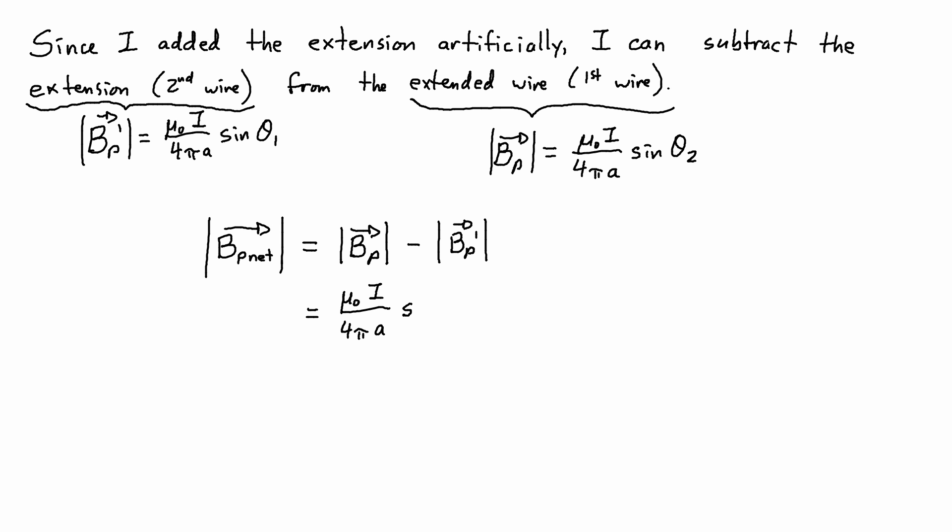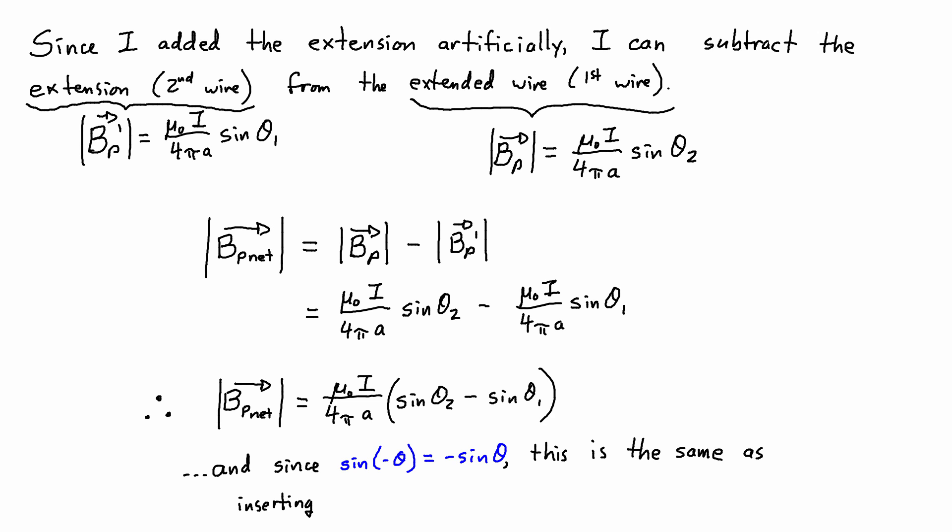And this gives me the net magnetic field at point P. So the net magnetic field strength at point P is mu naught I over 4 pi A times sine of theta 2 minus sine of theta 1. And since sine of negative theta equals negative sine of theta, this is the exact same result that we would get if we were to insert negative theta 1 into the original equation.